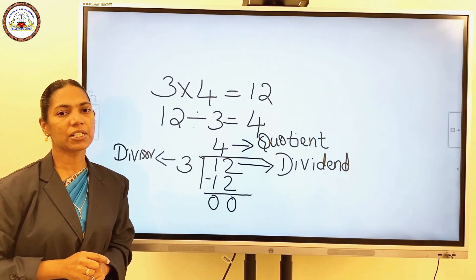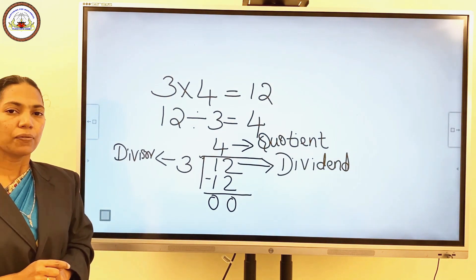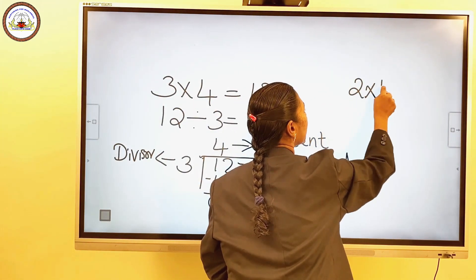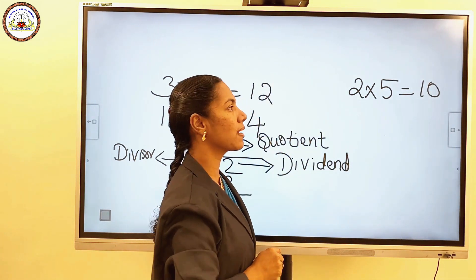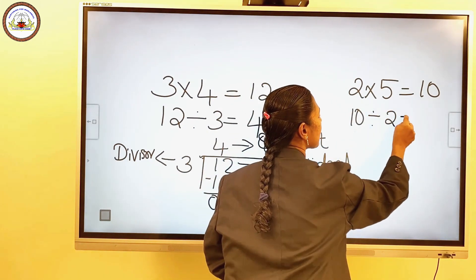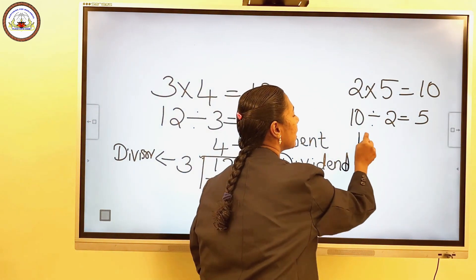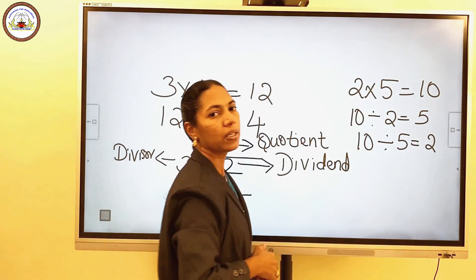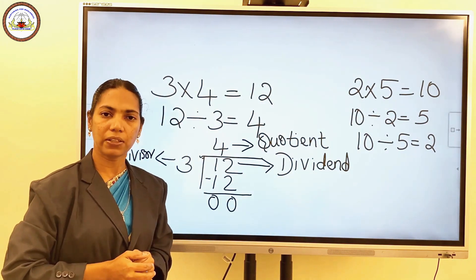From one multiplication fact, we can write two division facts. For example, 2 into 5 is equal to 10. So the corresponding division facts are: 10 divided by 2 is equal to 5, and 10 divided by 5 is equal to 2. So if we know the multiplication fact, we can write division facts also.